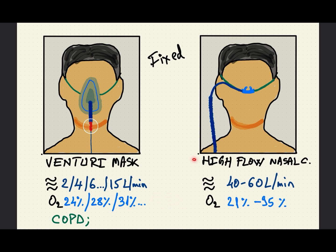On the right-hand side, the high flow nasal cannula relies on a machine that delivers air at extremely high flows of 40 to 60 liters per minute. Depending on the amount of oxygen mixed in, we can administer a fixed concentration of oxygen which can be precisely adjusted. An added advantage of high flow nasal cannula at such high flows is that it also creates a positive pressure in the alveoli at the end of expiration.